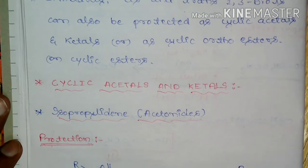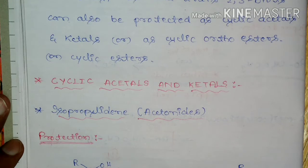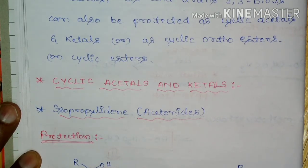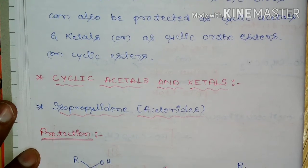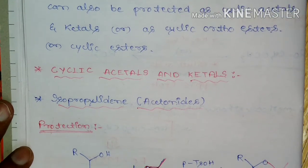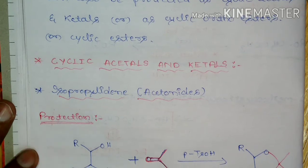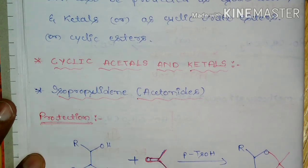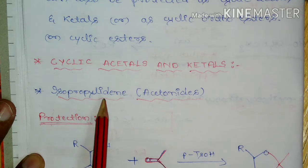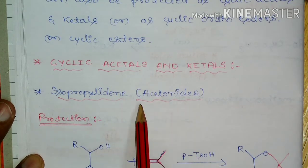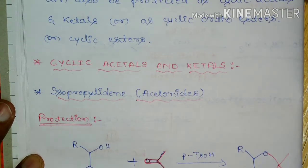First we will see how 1,2-diols or 1,3-diols can be protected as cyclic acetals and ketals. In this category, 1,2-diols and 1,3-diols can be protected as isopropylidene, also called acetonides.